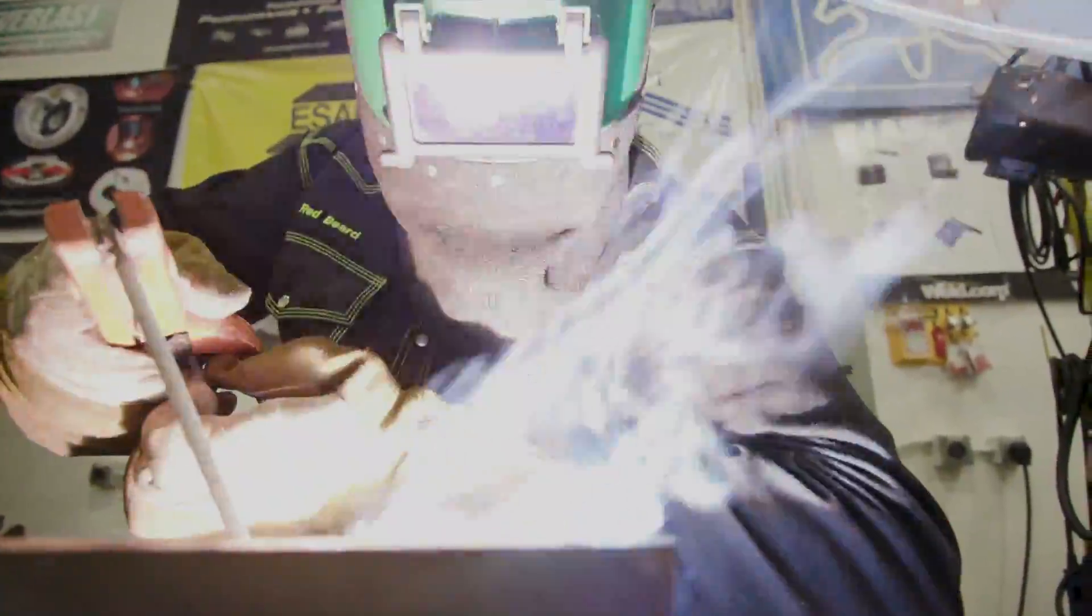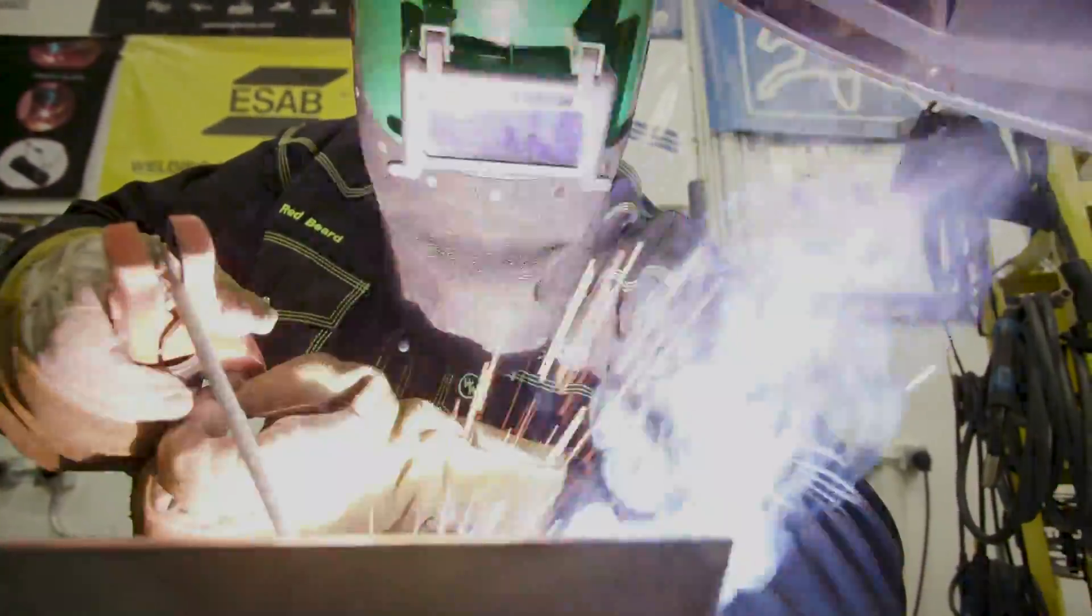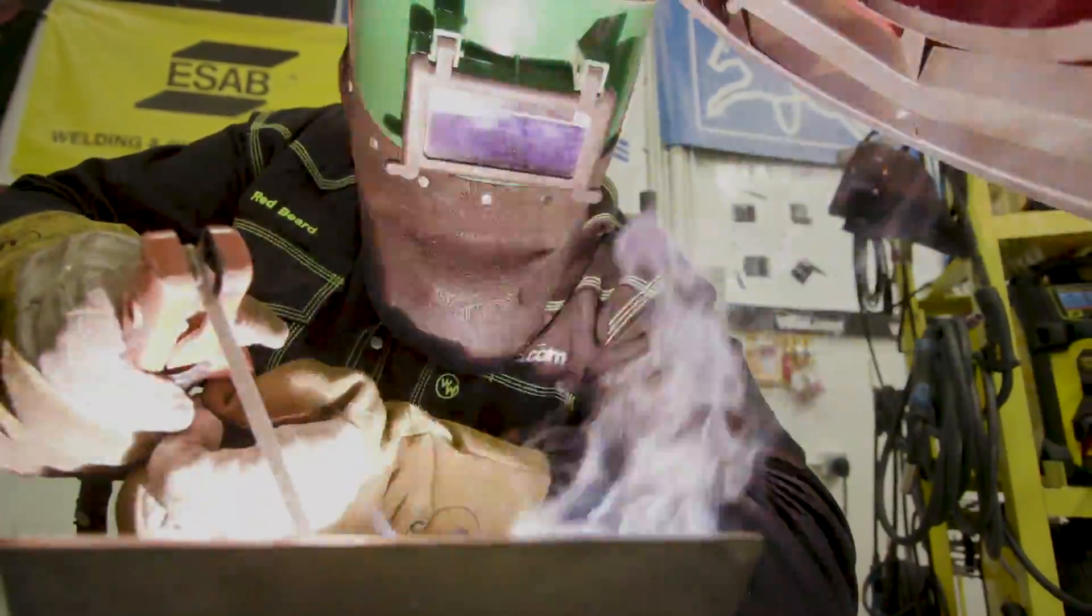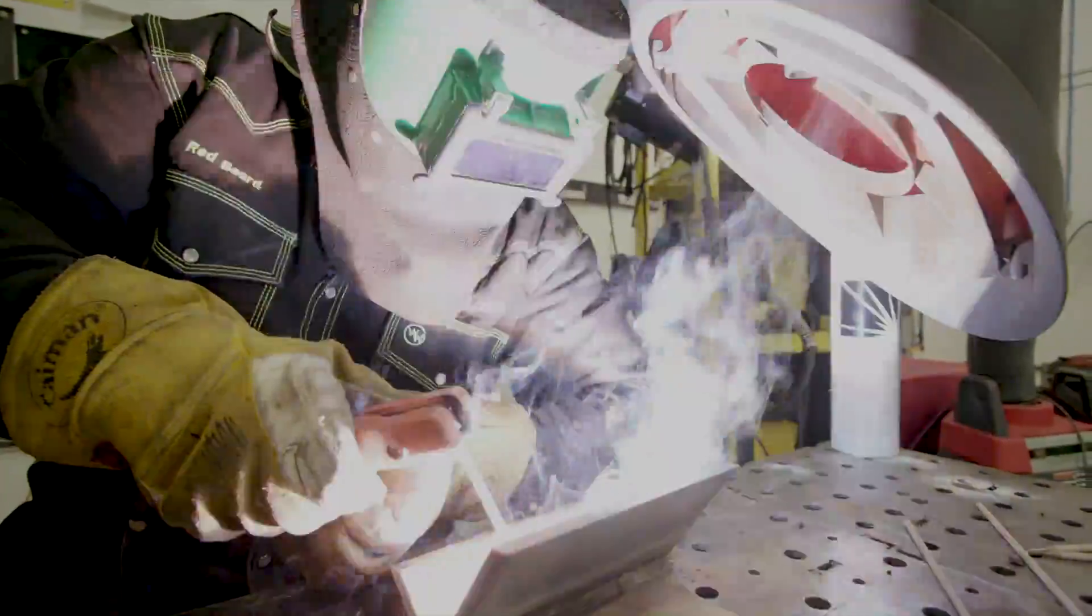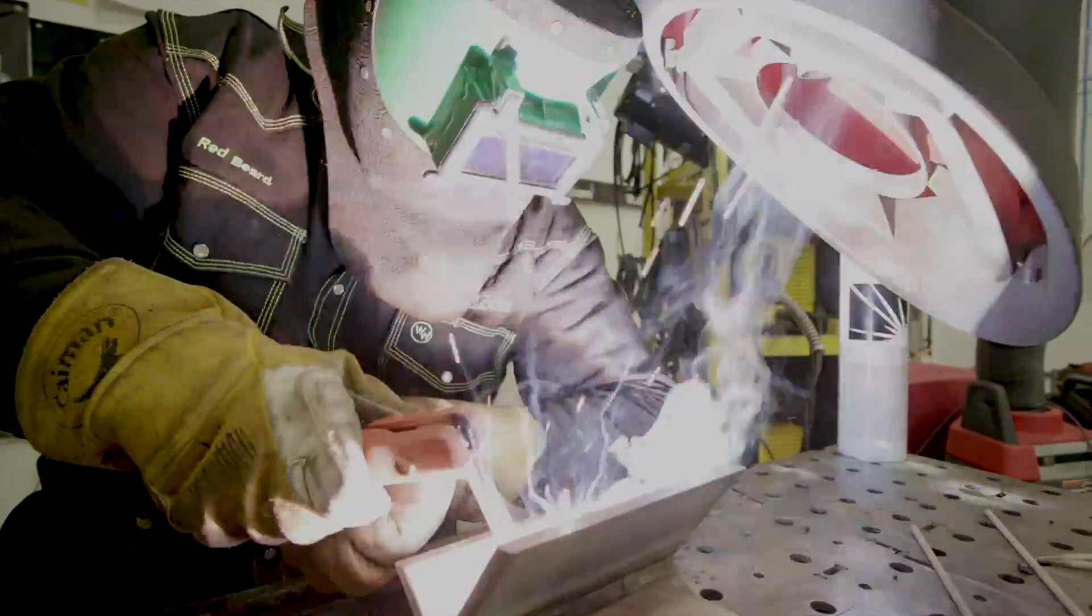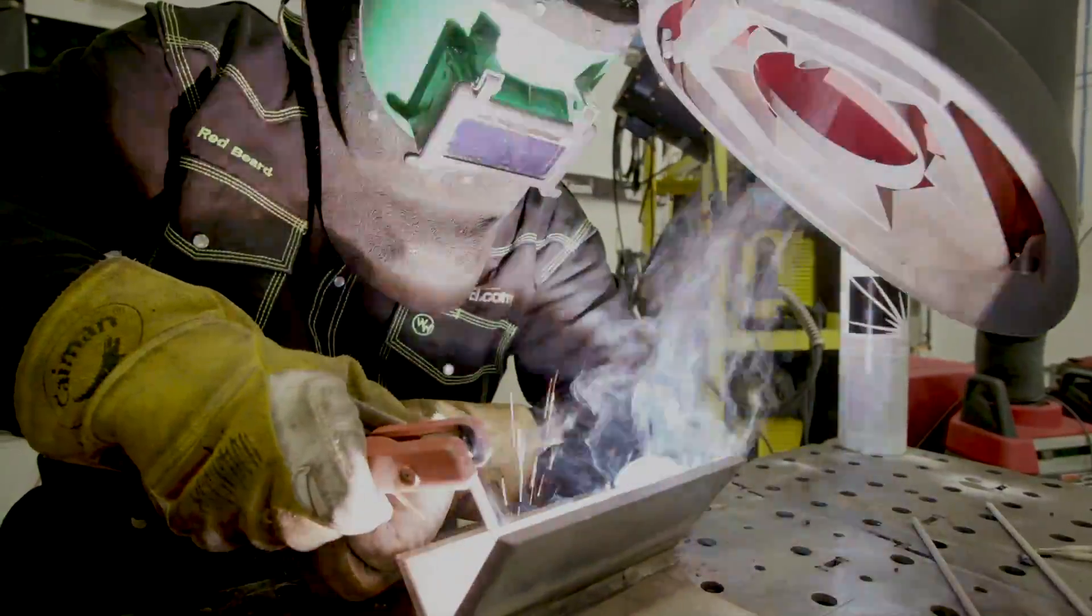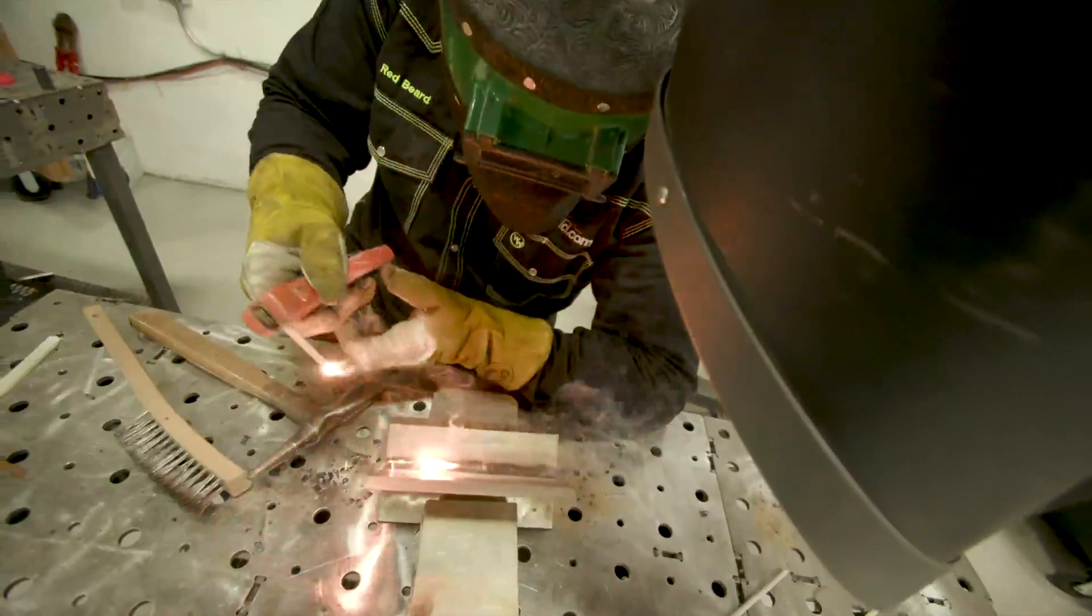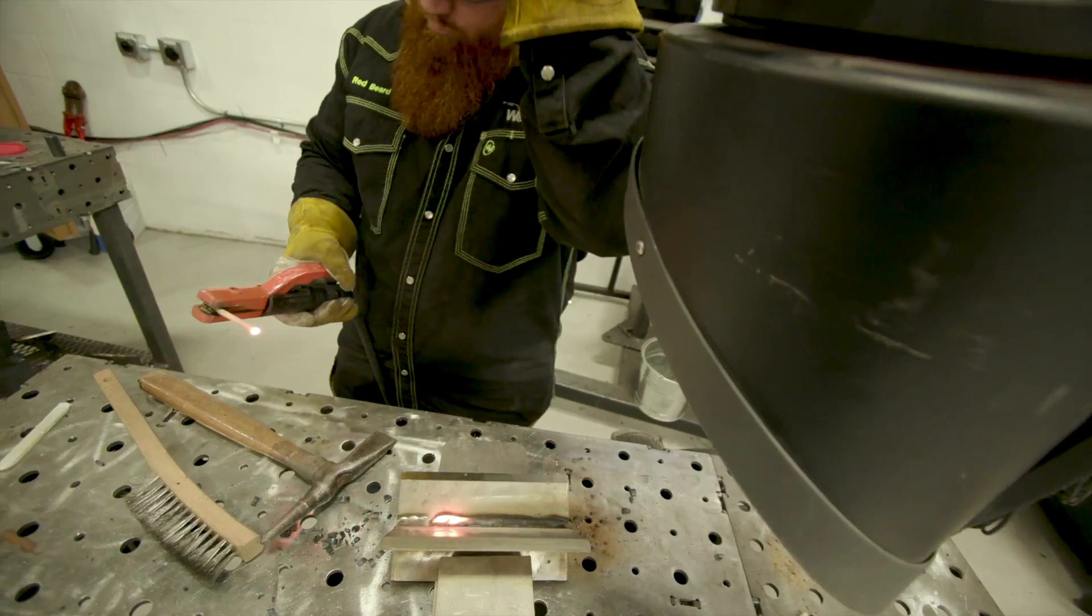Just going to go through here, do a slow steady pull, watch it tie in on the sides. Might have to do just a little bit of manipulation, but not much. Also going to be using fume extraction because this is stainless. Always want to be aware of or try to use fume extraction when possible. I'm going to use about a 25 to 30 degree travel angle.